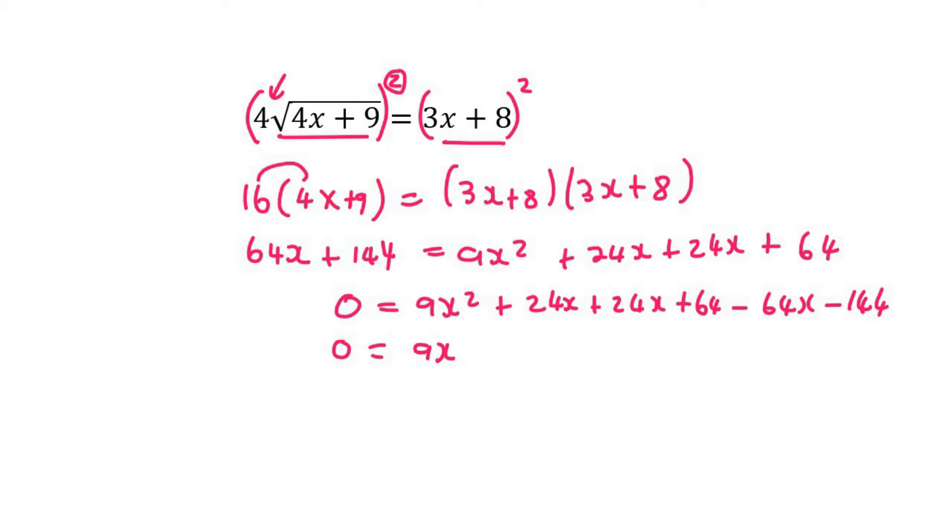And so 0 is going to be equal to 9x squared. Now I'm going to put all the x's together. So it's 24 plus 24 is 48. Minus 64 is negative 16x minus 80.